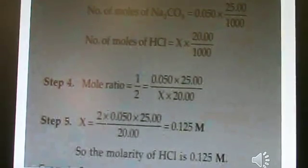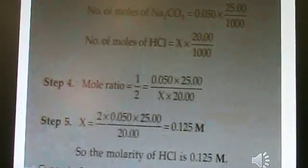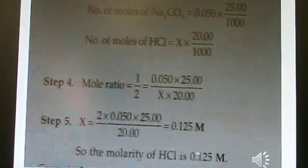Step three, the number of moles. The mole ratio is one to two. Number of moles of Na2CO3 is 0.05 times 25 divided by 1000. Number of moles of HCl is X times 20 divided by 1000.